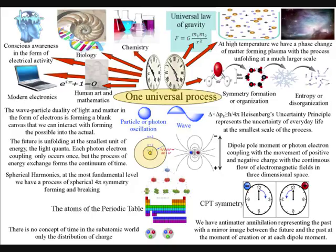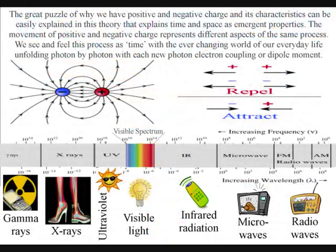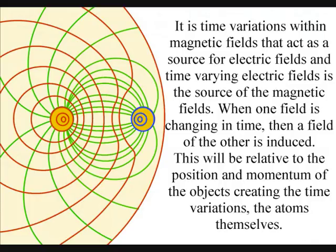This process is relative to the atoms of the periodic table and the wavelength of the electromagnetic spectrum of light. The electromagnetic field has two polarities of positive and negative charge that interact with each other relative to the movement of the atoms. We have like charges expanding out and opposite charges contracting and cancelling themselves out as a process of continuous creation. Relative to the atoms, photon oscillations or vibrations form the movement of charge and flow of electromagnetic fields in three-dimensional space.